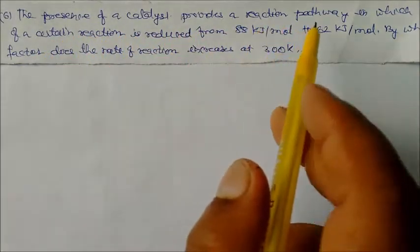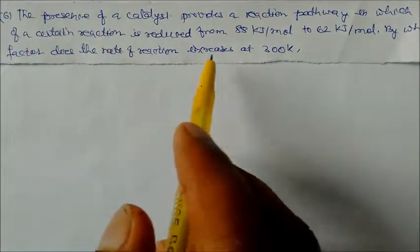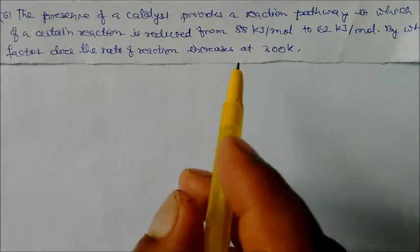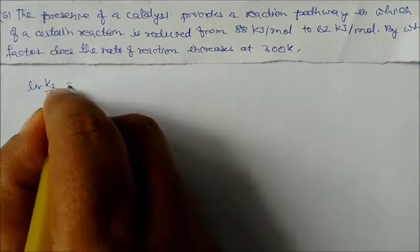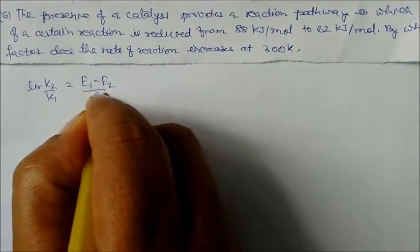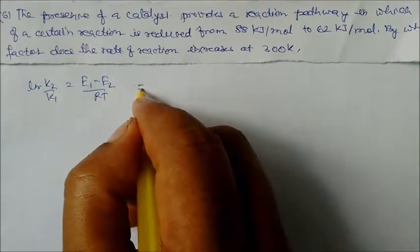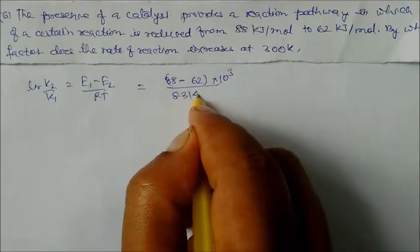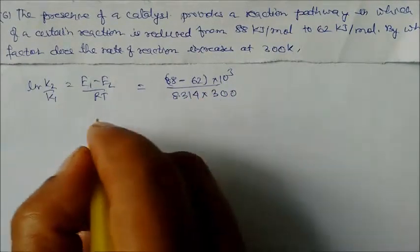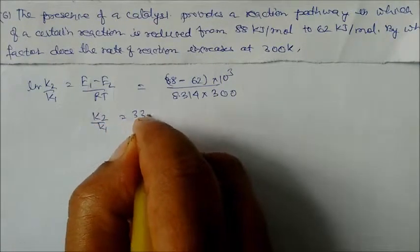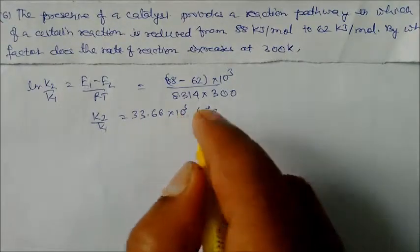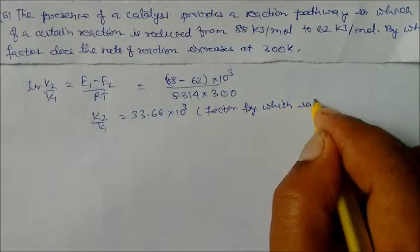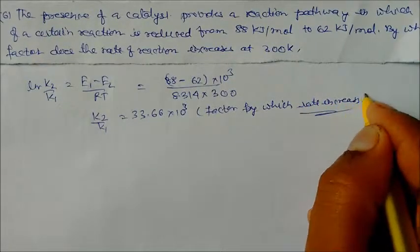Next problem: A catalyst provides a reaction pathway where activation energy is reduced from 88 kJ/mol to 62 kJ/mol. By what factor does the rate increase at 300 K? We write ln(K2/K1) = (E1 minus E2)/(R×T) = (88 minus 62) × 10³ / (8.314 × 300). On solving, K2/K1 = 33.66. That is the factor by which the rate increases.